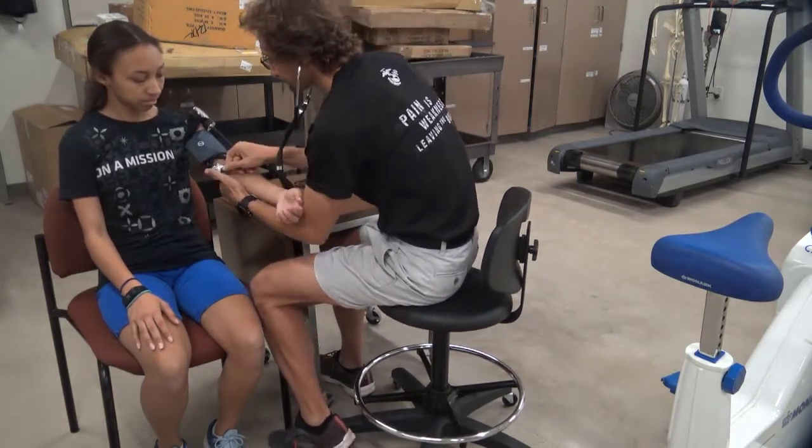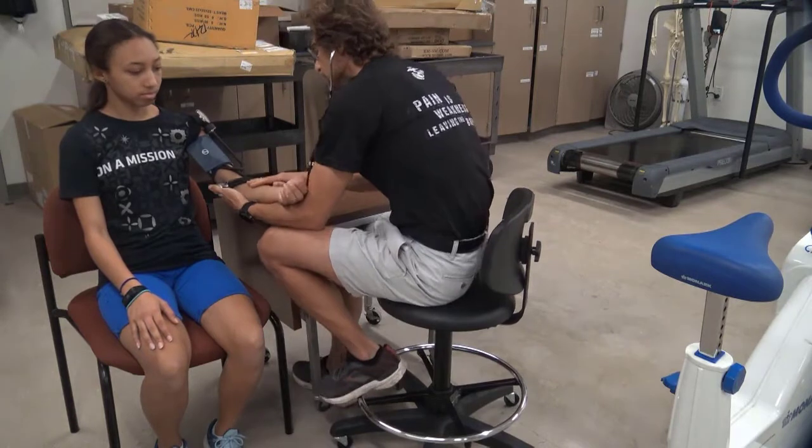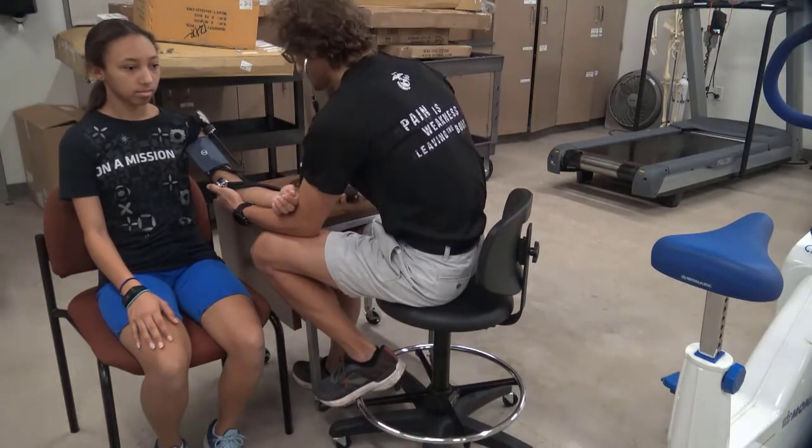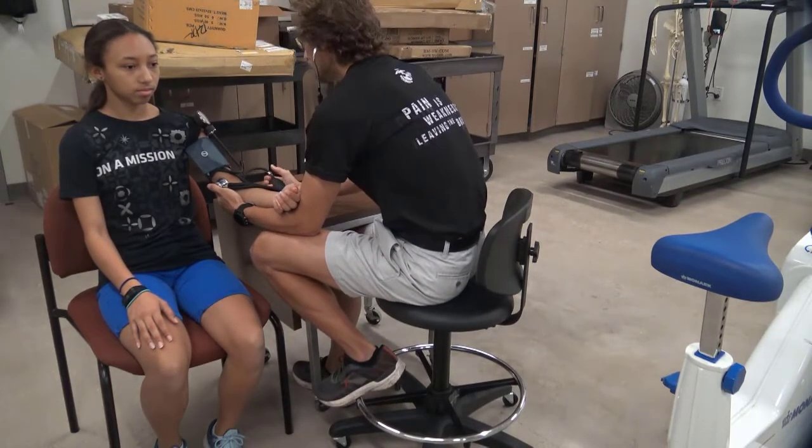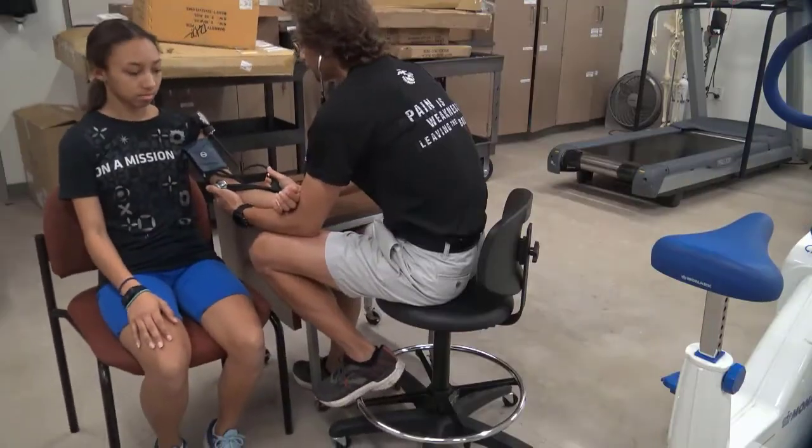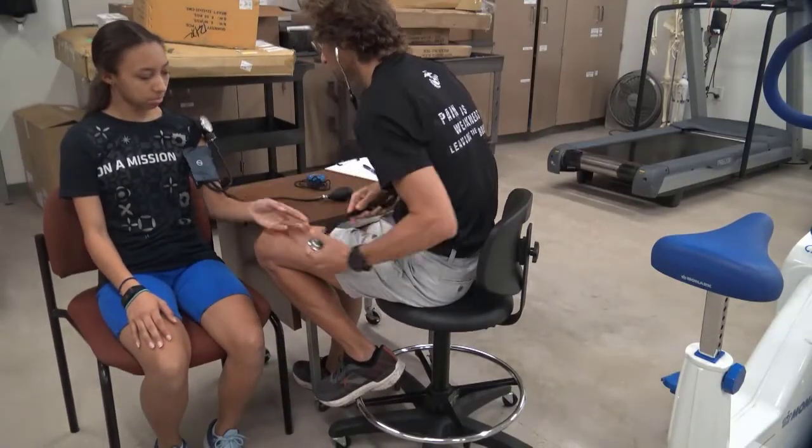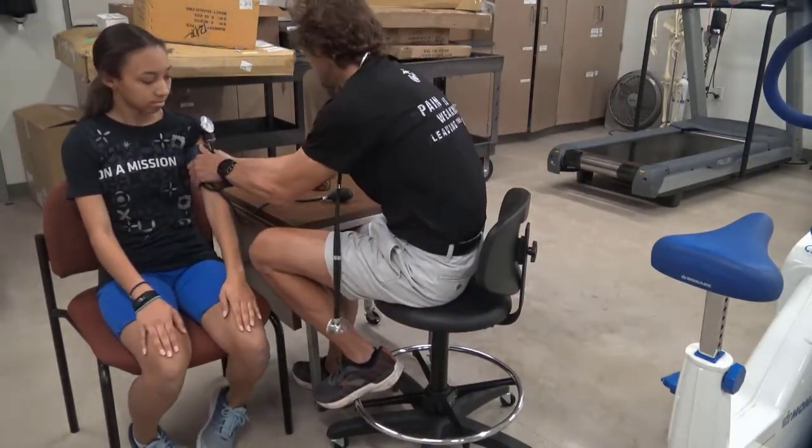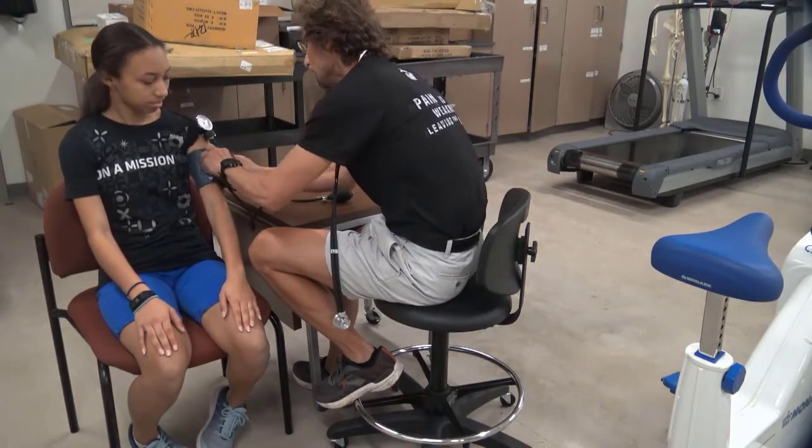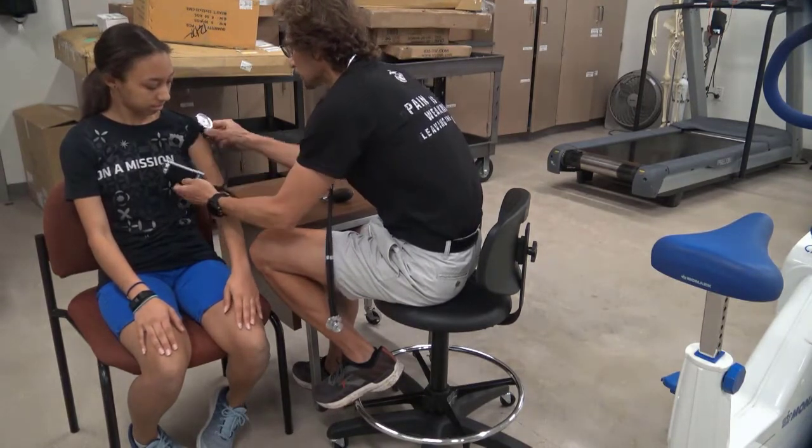As with any submaximal exercise testing for which the aim is to predict maximal levels, there is error in making these predictions and so it's important to be aware of this. This error is discussed in greater detail in our lectures. Once pre-exercise heart rate and blood pressures have been measured and everything is in the normal range, we are ready to begin the test.